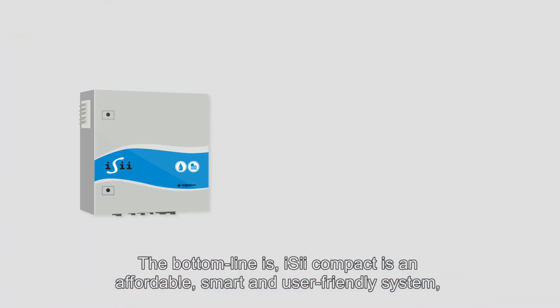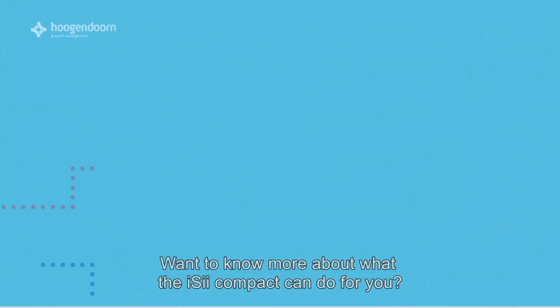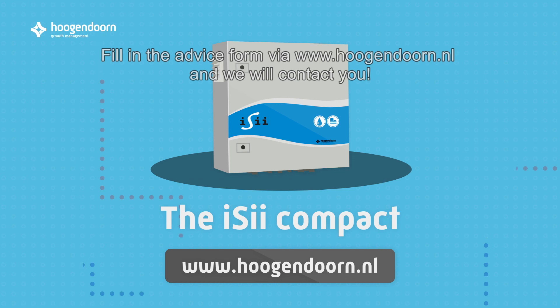The bottom line is, Easy Compact is an affordable, smart and user-friendly system that gives you control in producing high-quality crop. Want to know more about what the Easy Compact can do for you? Fill in the advice form via www.hogandorn.nl and we will contact you.